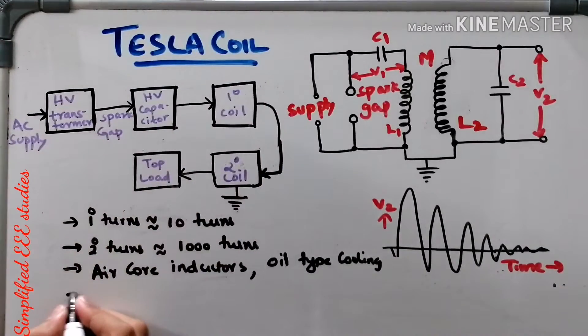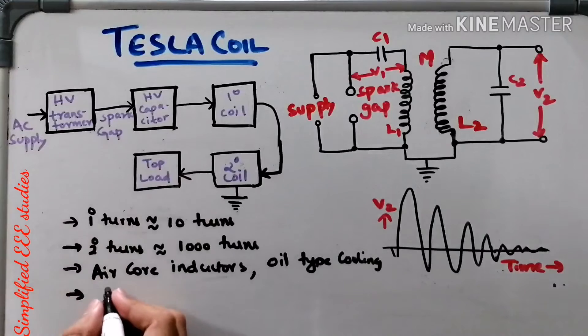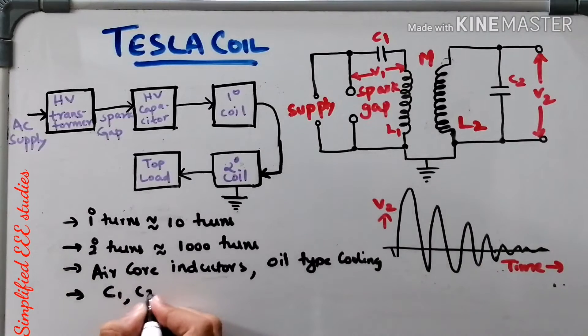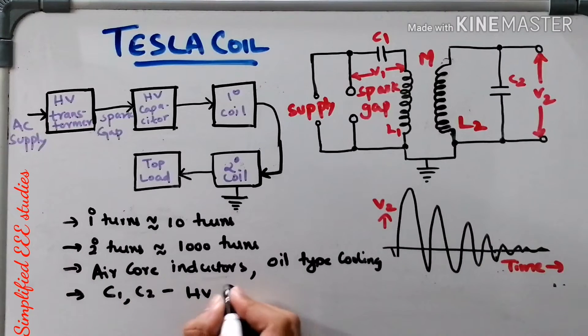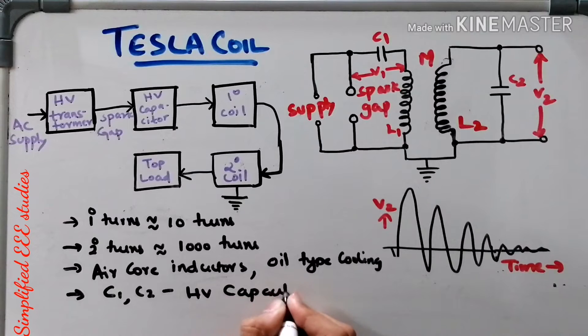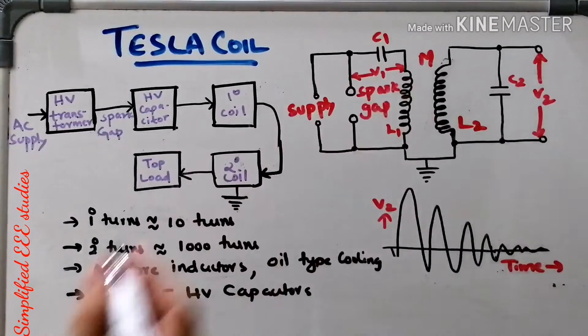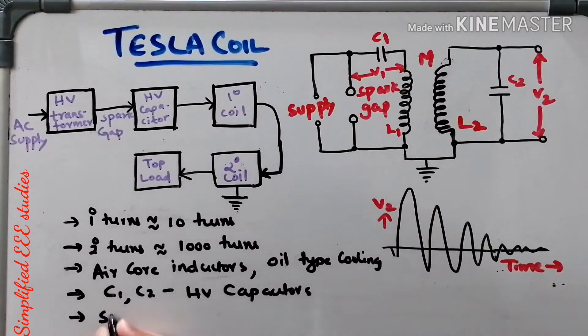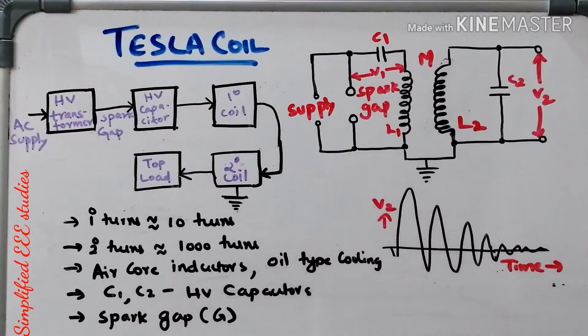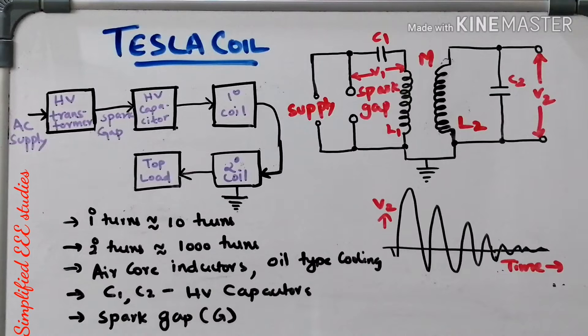Moreover, if I look at the construction, we are having high voltage capacitors C1 and C2. HV capacitors or HV condensers. You can call condensers also. Then we have spark gap or spar gap. So these are the basic construction details of Tesla coil.